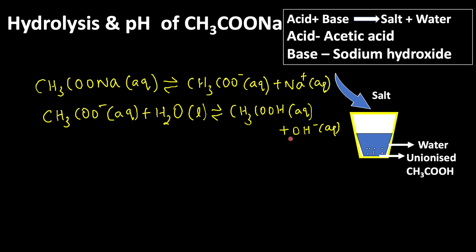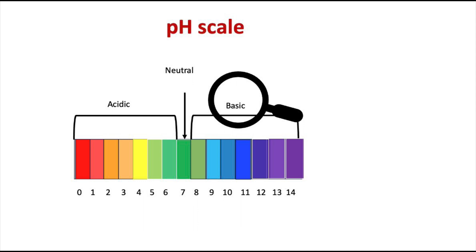So what happens to this OH- ions? This results in increasing concentration of OH- ions in aqueous solution. Because of this, the solution becomes basic, so the pH also becomes more than 7.